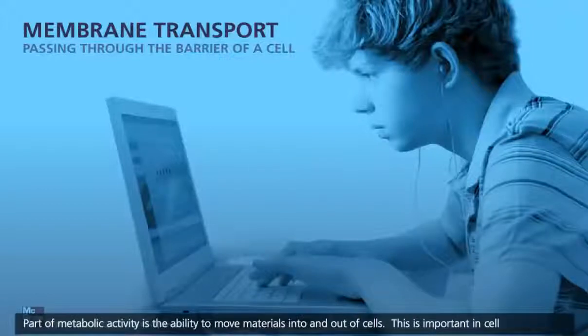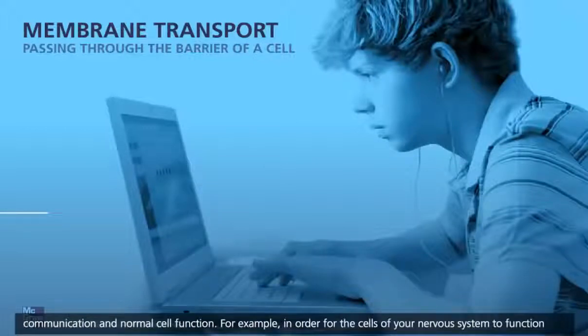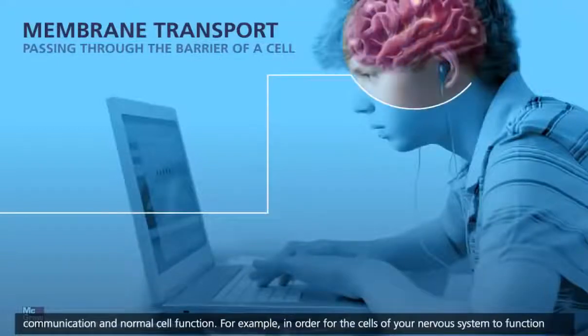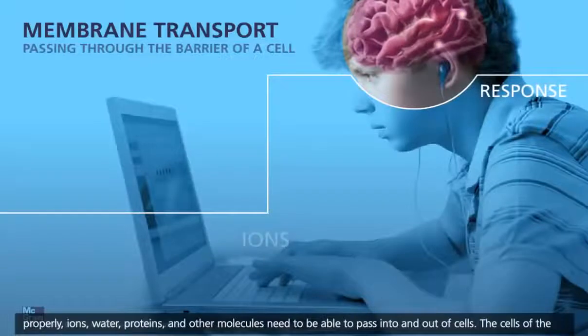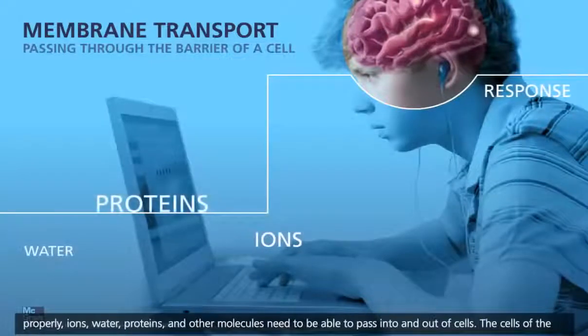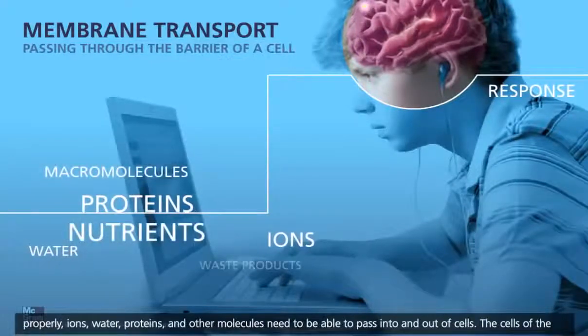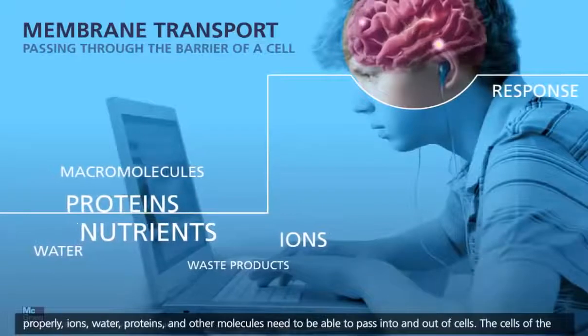Part of metabolic activity is the ability to move materials into and out of cells. This is important in cell communication and normal cell function. For example, in order for the cells of your nervous system to function properly, ions, water, proteins, and other molecules need to be able to pass into and out of cells.